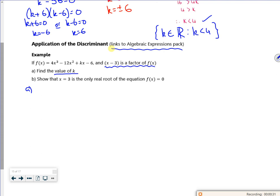So write down what we know. We know if x minus 3 is a factor of f(x), then f(3) is equal to 0. So if I put 3 in for x, I get 0 out. So 4 lots of 3 cubed minus 12 lots of 3 squared plus k lots of 3 minus 6 is equal to 0.